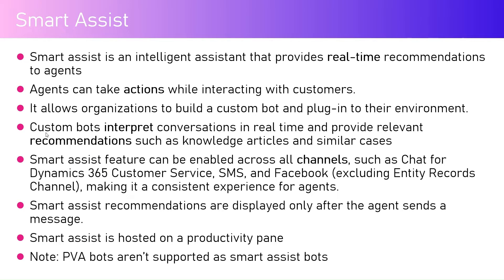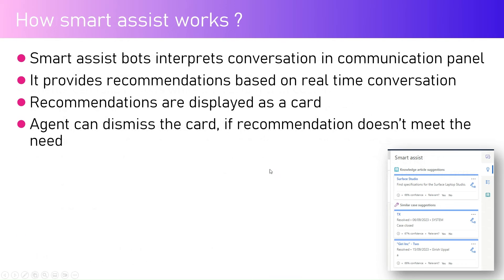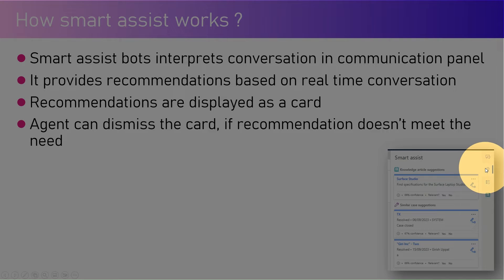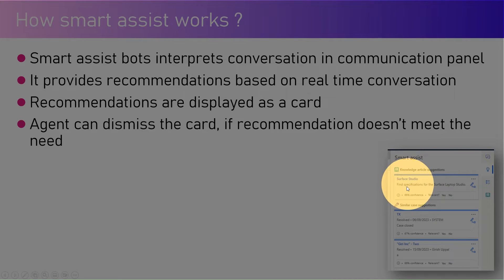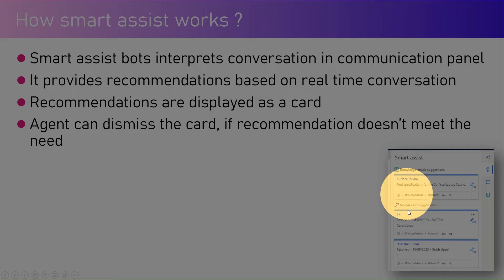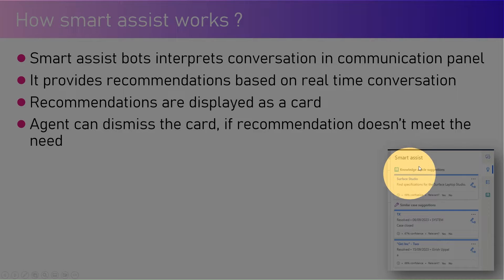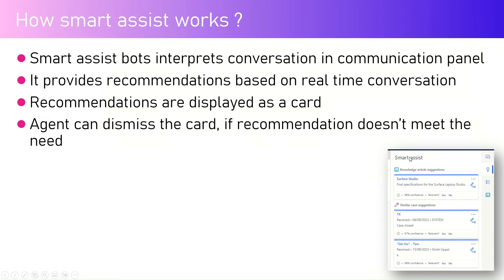There are some settings we need to do before enabling this. Smart assist shows as a bulb icon on the top right and will suggest knowledge articles, displaying all that it has found. In this example, one knowledge article was found and a couple of similar case suggestions were found — this is what the artificial intelligence does within Dynamics 365 Customer Service Omnichannel.